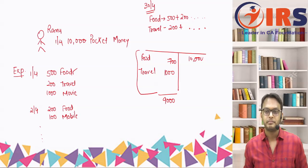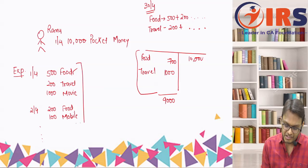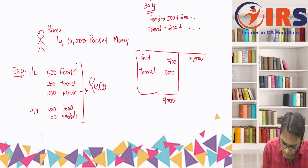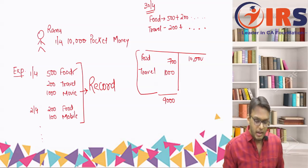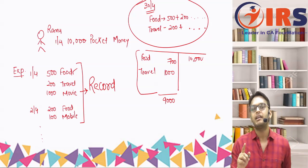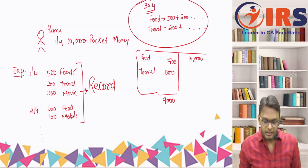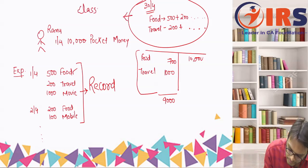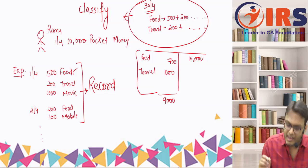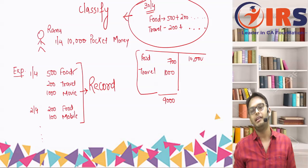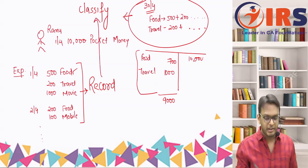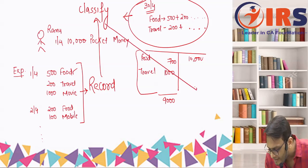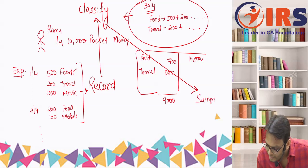So first, when Ramu made any expense, he wrote it down — that is called recording. Then he grouped all food-related expenses together, all travel-related expenses together — that is called classifying. Classifying means recording similar nature of expenses at one place. After recording, Ramu classified; and after classifying, Ramu summarized.